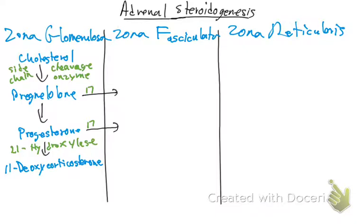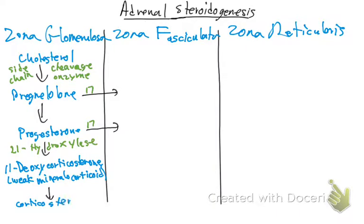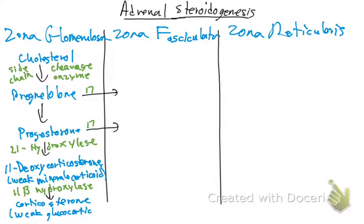Then 11-deoxycorticosterone needs to go to corticosterone, using the enzyme 11-beta hydroxylase. So with 11-beta hydroxylase, you get corticosterone, which is a weak glucocorticoid.